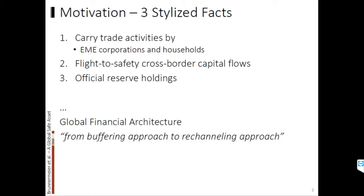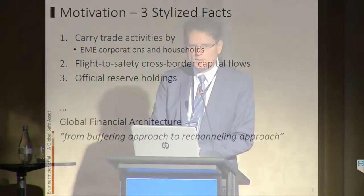The global safe asset can be generated on its own. The first stylized fact is there's a lot of trading activity going on in emerging economies by corporations and also by households. I want to highlight this flight to safety across borders, which is primarily the case because the safe asset is supplied by a few countries and not symmetrically supplied. Then I will introduce some official reserve holdings in order to stem against this flight to safety capital flows.